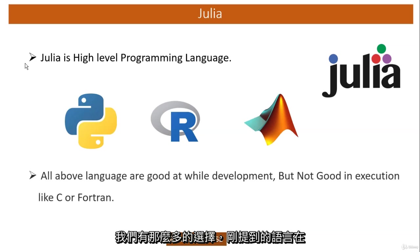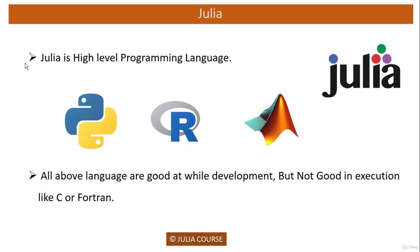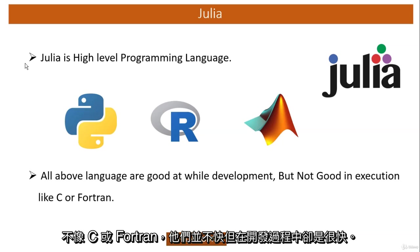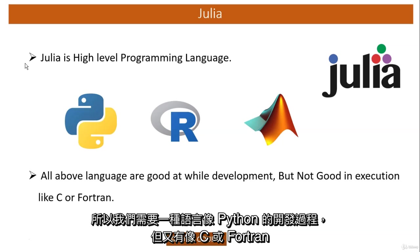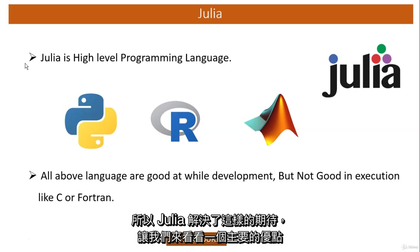All of our languages are very good during development time. With just a small snippet of code you can do many tasks in Python, R, or MATLAB. But these programming languages are not good in execution time like C or Fortran — they are not very fast, while the development process is very fast. So we need a language which is as good as Python in development and as good as C or Fortran in execution or running the program. Julia solves all those purposes.